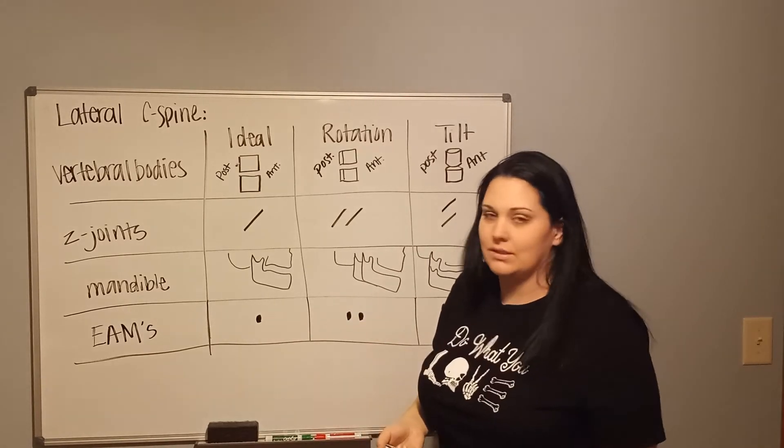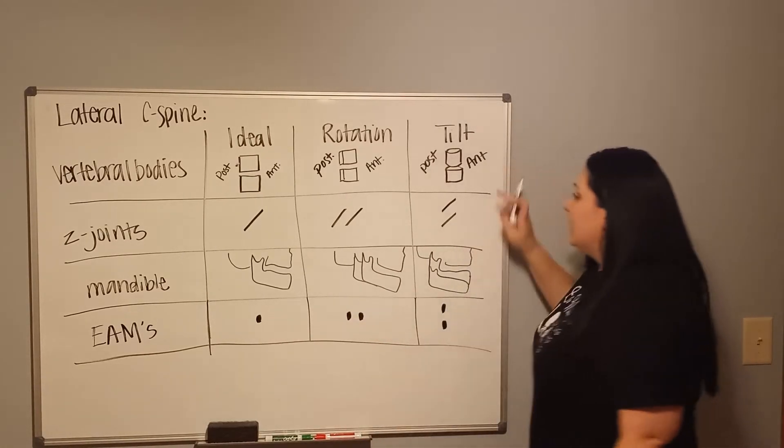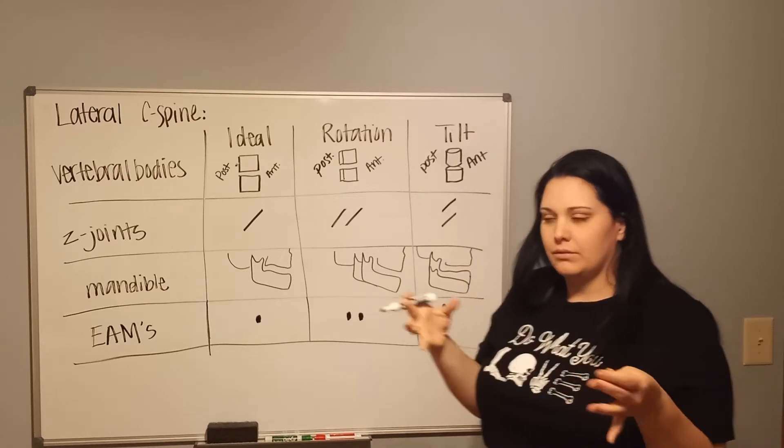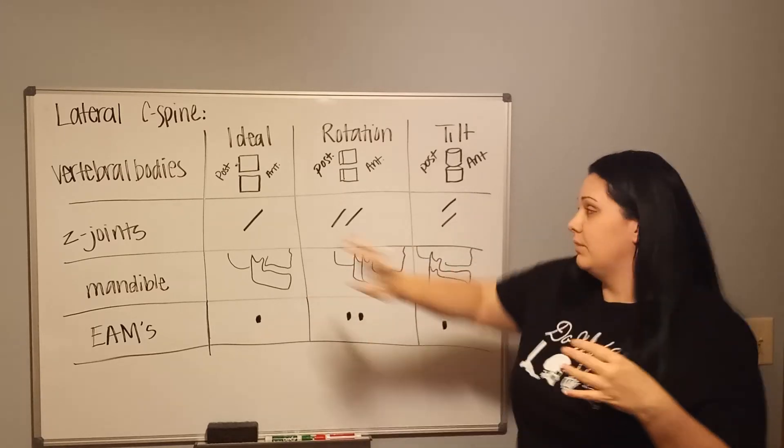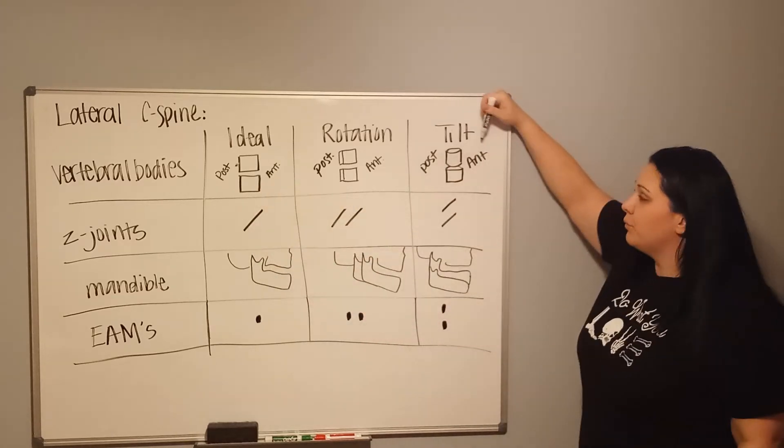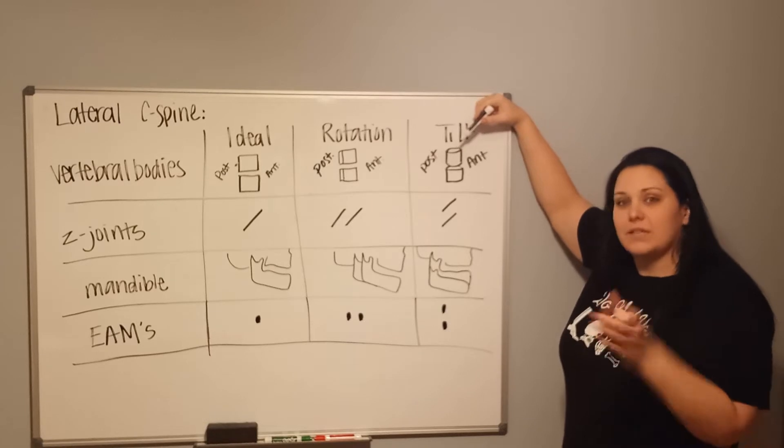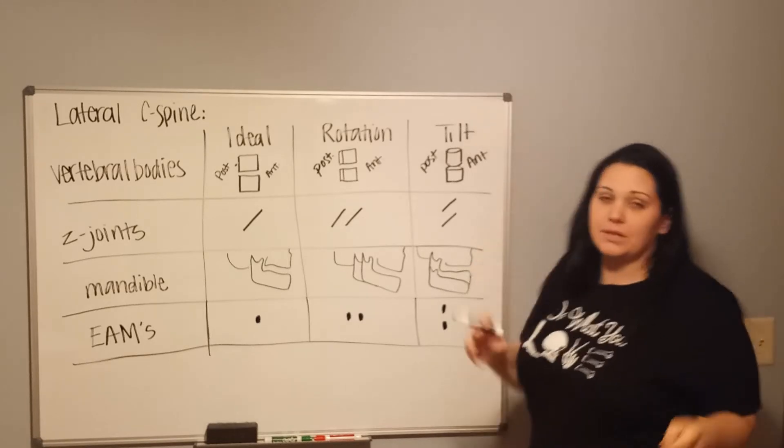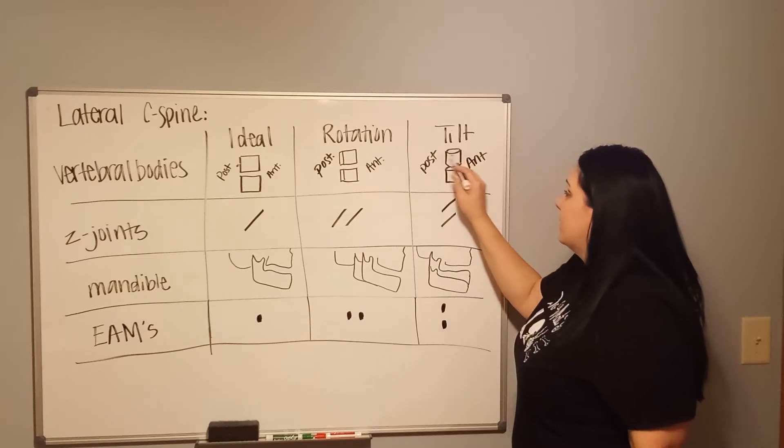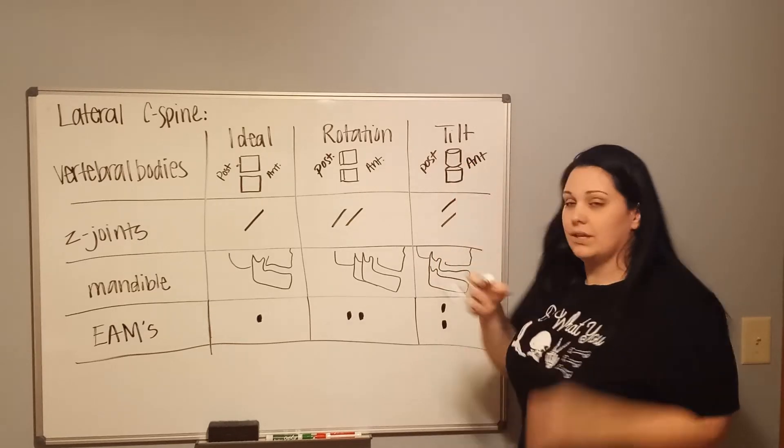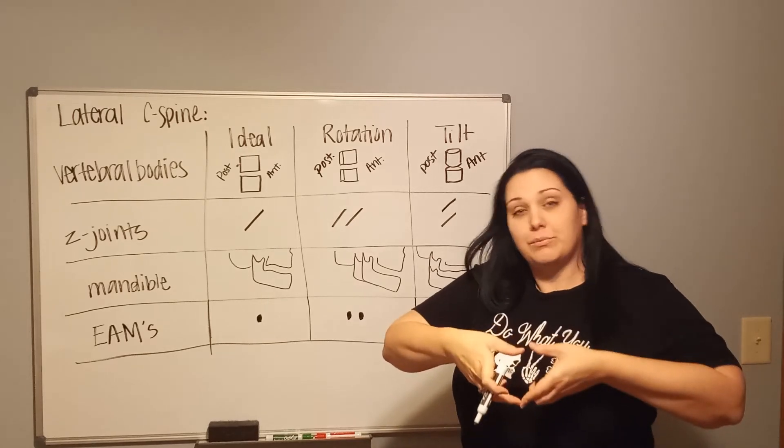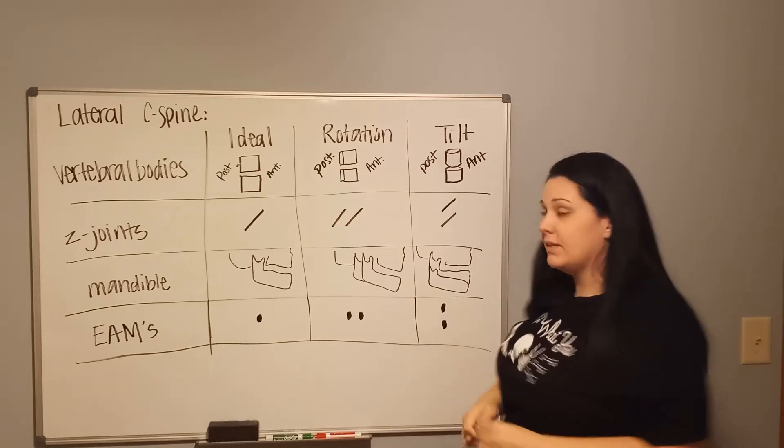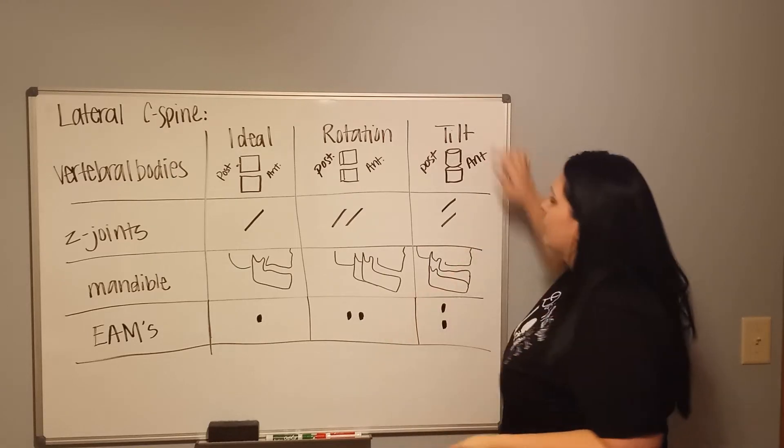Vertebral bodies for rotation will show up like ice cubes. Tilt, on the other hand, is going to show superior-inferior displacement. With tilt, you're going to see the articulating surfaces of that superior or posterior portion of the vertebrae. I call tilt vertebrae how they look like marshmallows, because I can see that articulating surface and it looks, instead of flat, it has like an oval shape to it.